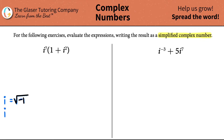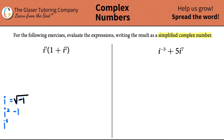i squared equals negative one. If you take the square root of negative one and square it, because you have two of them, the square root and the square cancel, so you're left with negative one. i to the third is the same as i squared times i, which is negative one times i, so just negative i. And i to the fourth is i squared times i squared, negative one times negative one, which is positive one. These are the four you have to memorize. Go back to the previous videos for the full rundown.